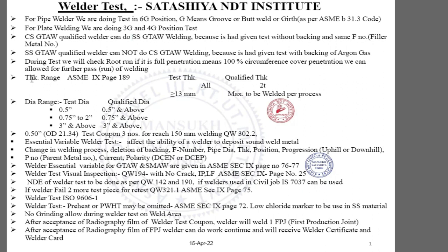For thickness range qualification, if a welder gives the test at any thickness, he is qualified for double that thickness. For example, if a welder does the test in 6G position with 7.11 mm thickness, he is qualified for up to 14 mm thickness. But if a welder does the test above 13 mm thickness, he is qualified for maximum thickness to be welded in the same process. This is given in ASME Section 9, page 189.